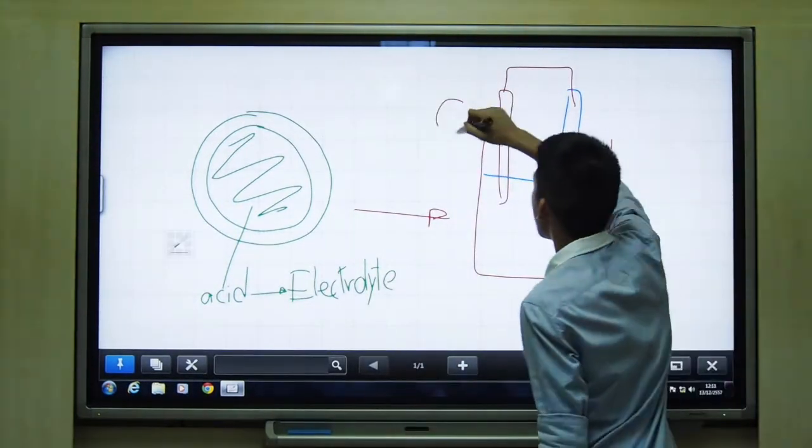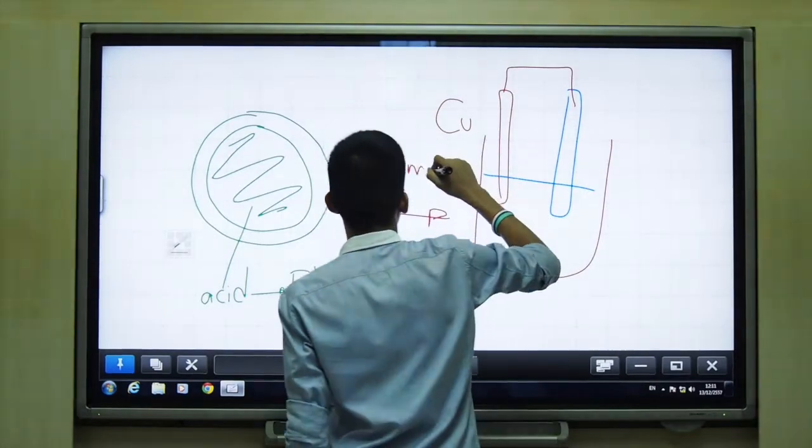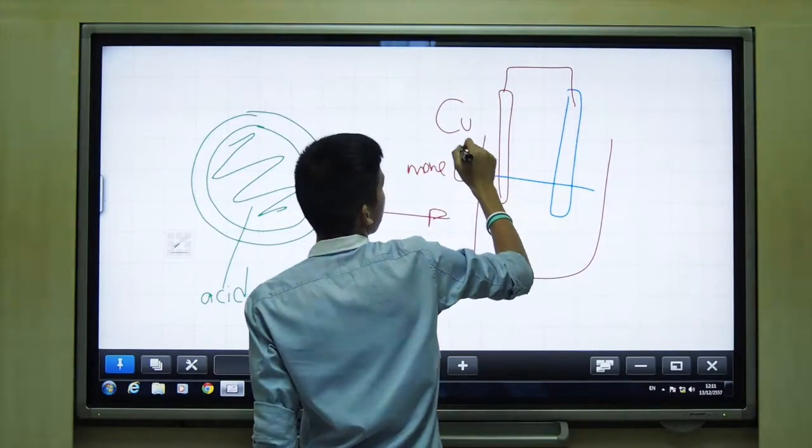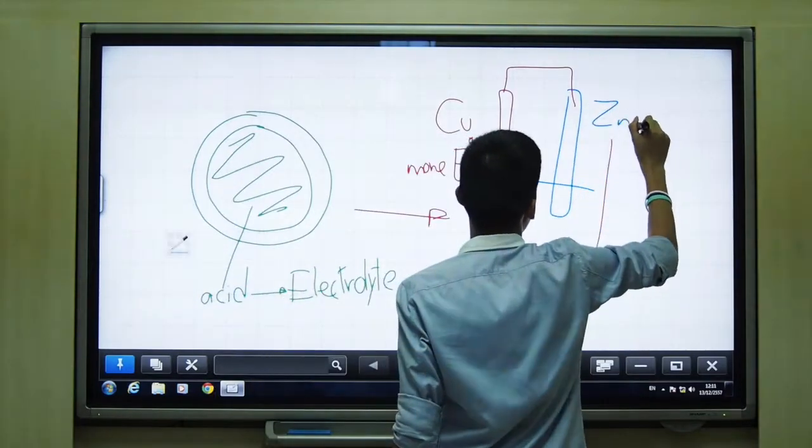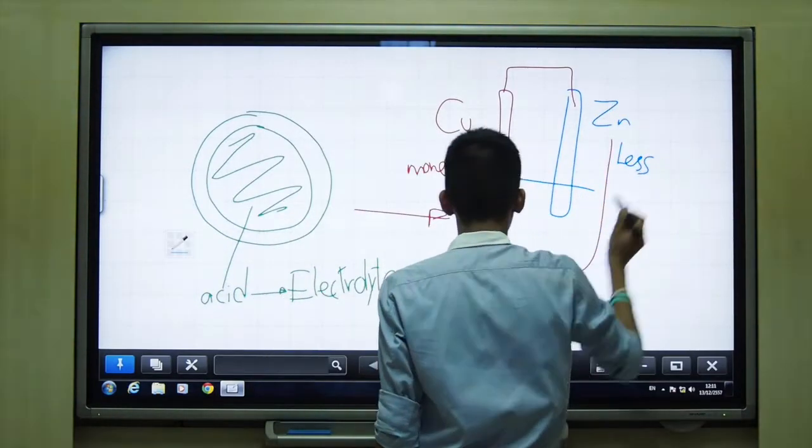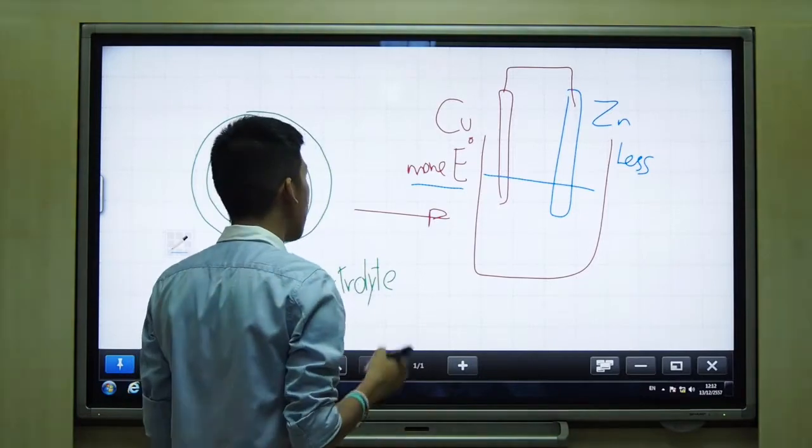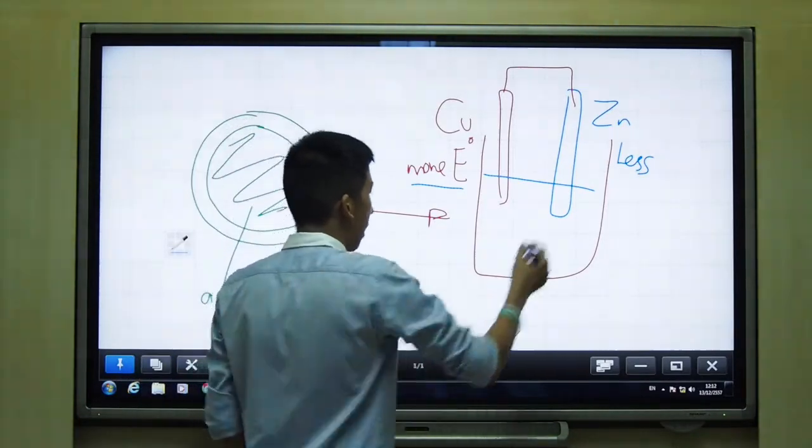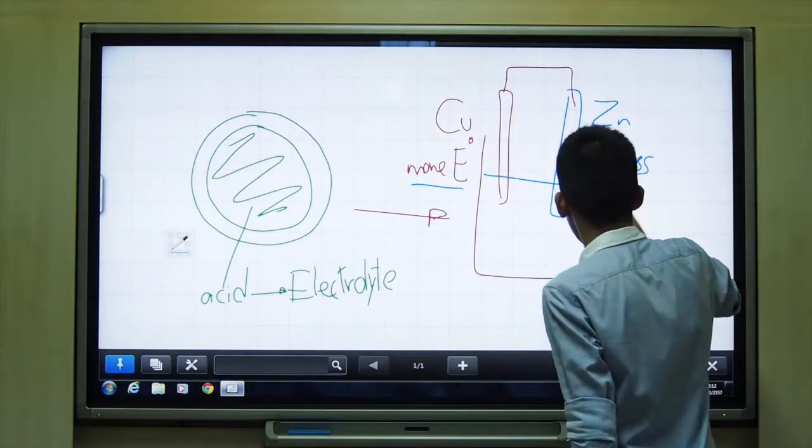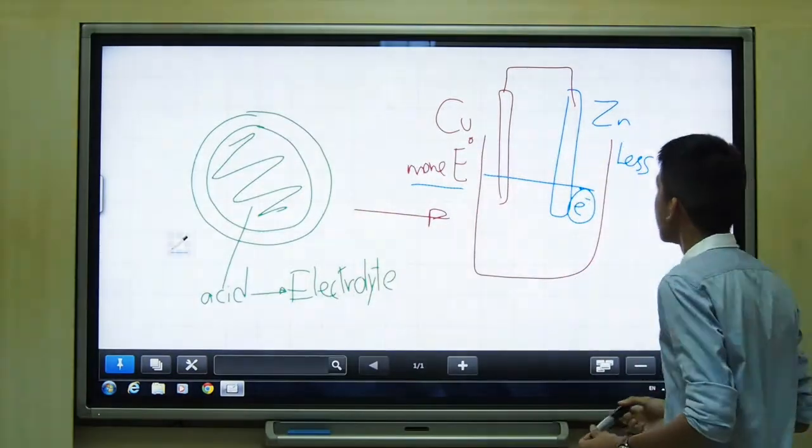The one that is copper has more voltage or E0, and the other one in zinc has less. The one that has more E0 will have reduction reaction, and the one that has less, that will be oxidation reaction.